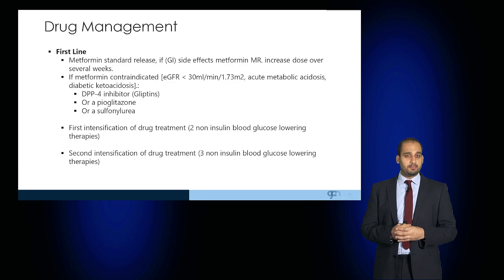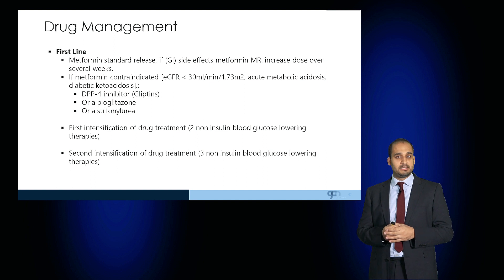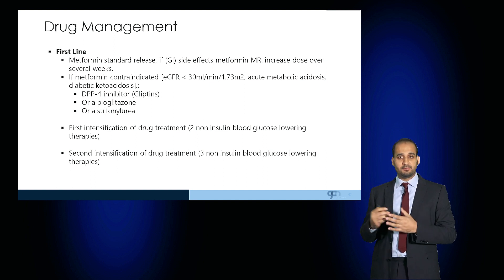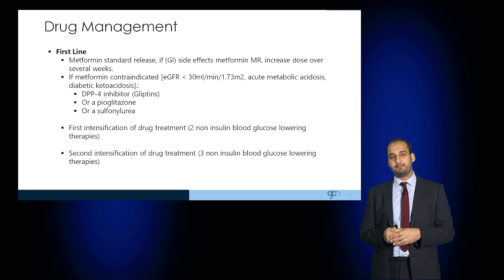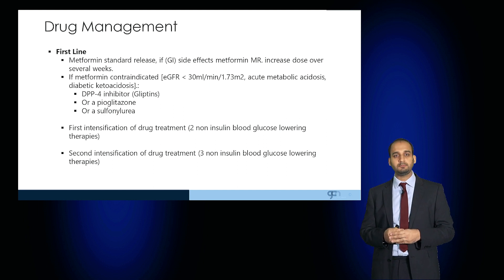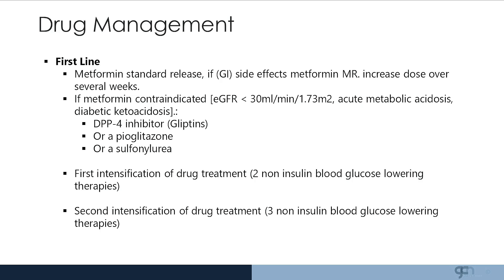For drug management, the first-line treatment is metformin standard release; if there are gastrointestinal consequences, modified release can help with side effects. Metformin is contraindicated in advanced renal disease, acute metabolic acidosis, and diabetic ketoacidosis. Other drugs available include DPP-4 inhibitors such as gliptins, pioglitazone, and sulfonylureas. If glycemic control remains insufficient, a first intensification of drug treatment can be added, followed by a second intensification drug if needed.